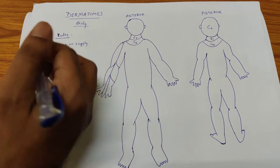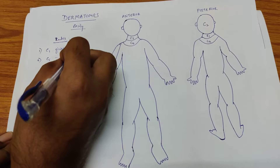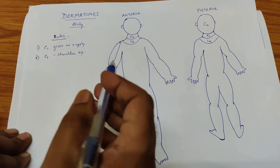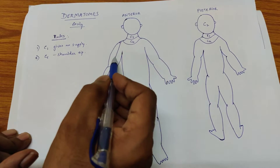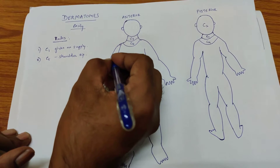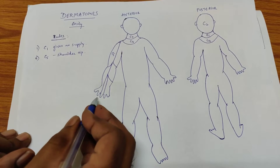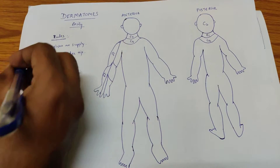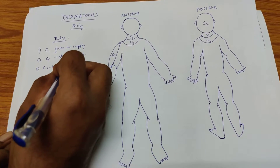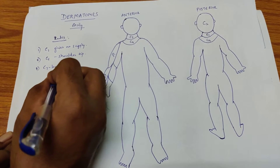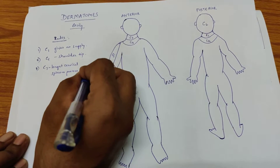The next rule is C5 supplies the shoulder tip. The dermatome innervation comes from the outside half to the inside half. So the outside half — C5 supplies the shoulder tip. Then the forearm and the two outer fingers, that is the little finger and fourth finger, are supplied by C6. The next rule is C7, which is the longest cervical spinous process, supplies the longest finger — that is the middle finger.